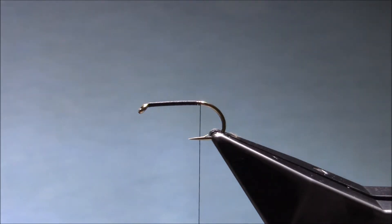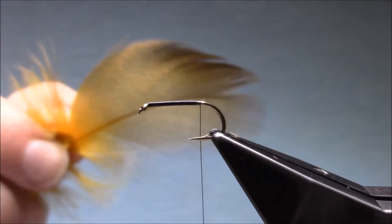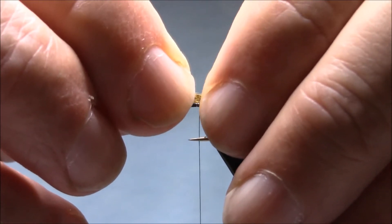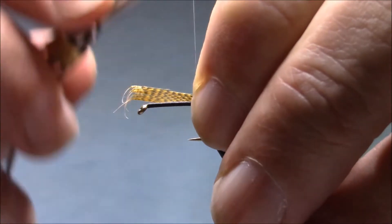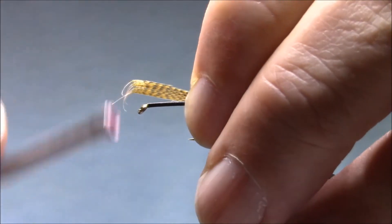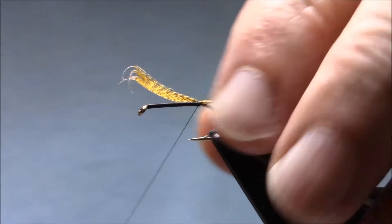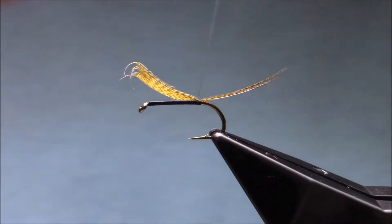The tail is going to be bronze mallard, and this is dyed Irish golden olive. The tail length is up to yourself, normally the length of the body.